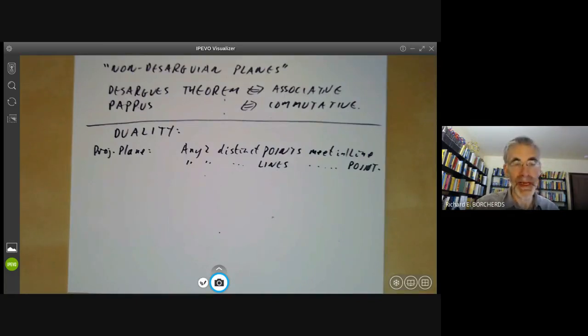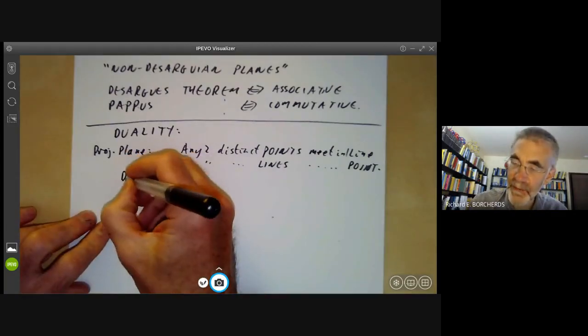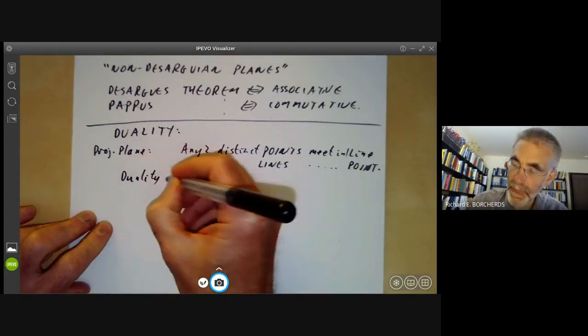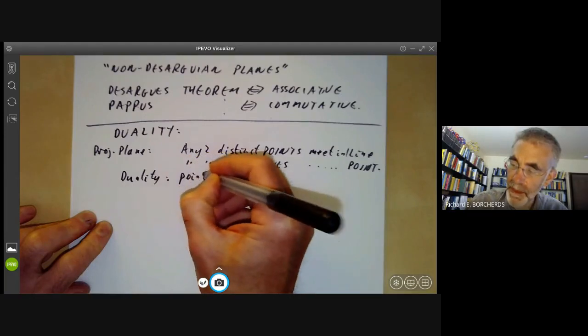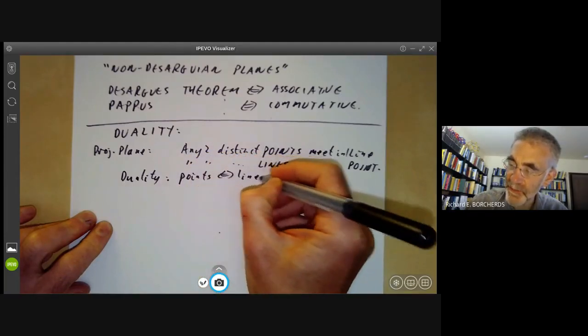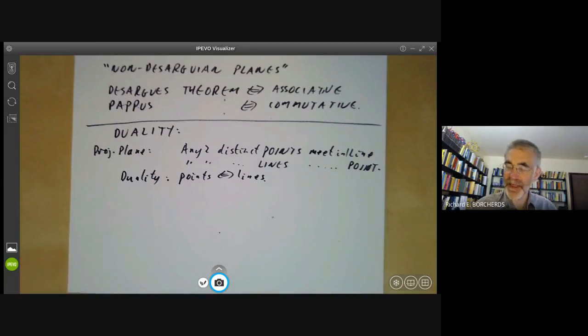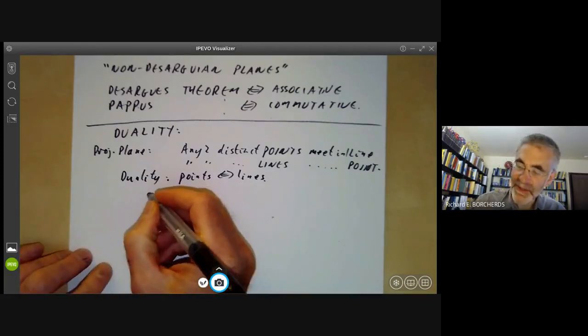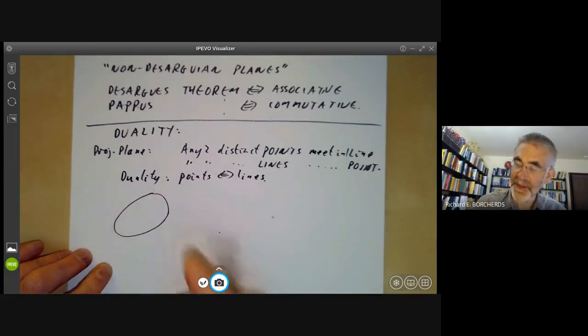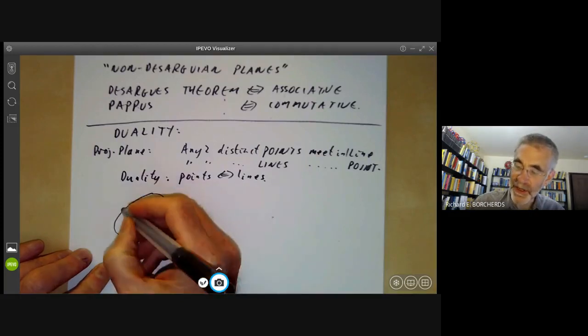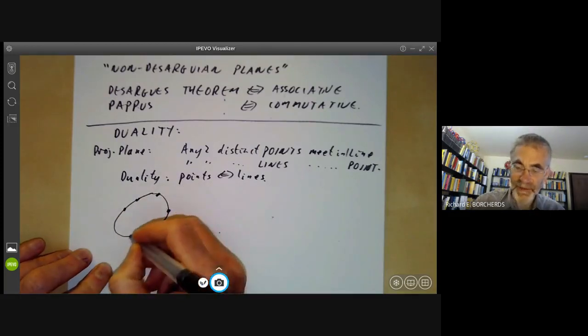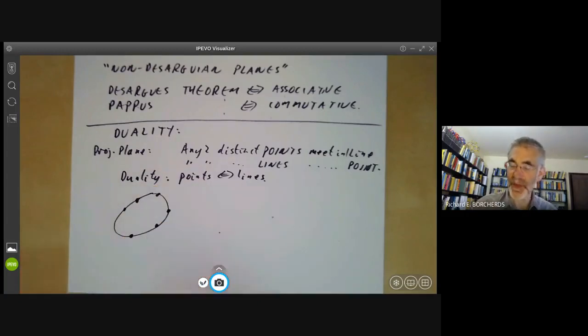And you notice that these two axioms are dual if you swap the words point and line. And what this turns out to mean is that pretty much any theorem in the projective plane that you say about lines and points has a dual theorem about points and lines. So we have a duality - points get switched with lines.